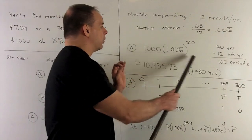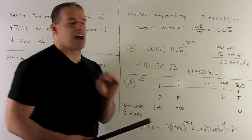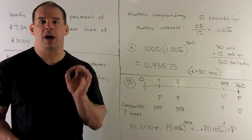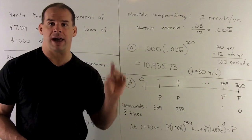When we evaluate, so you put this in your calculator, out comes $10,935.73. So that's how much $10,000 is worth after 30 years at that rate.